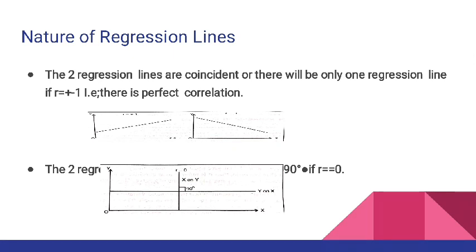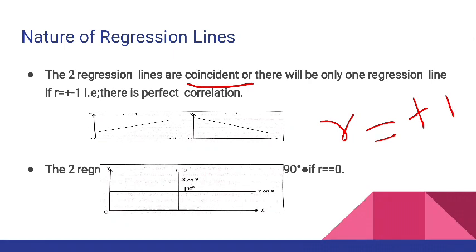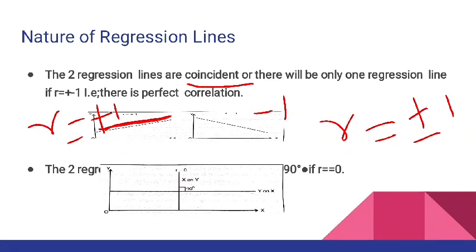This is very important — the nature of regression lines. Pehli situation: agar do regression lines coincident hon — matlab ek line doosre ke upar lie kar rahi ho — to ek hi regression line banegi. X on y bhi wahi hogi, y on x bhi wahi hogi, to r ki value ya to plus 1 hogi ya minus 1. Jab left to right upward jaata hai to r = +1 (positive correlation). Upper left se lower right jaata hai to r = -1.